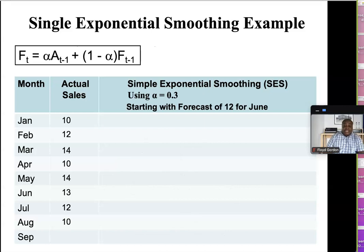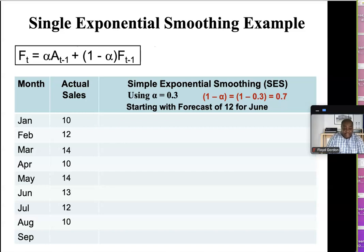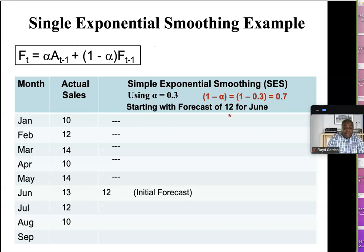Let's try another one. This time we're using alpha equal to 0.3, and we're told to start with a forecast of 12 for June. If alpha is 0.3, then one minus alpha is 0.7. So we skip January, February, March, April, and May, and we start with a forecast of 12 for June — that's our initial forecast.